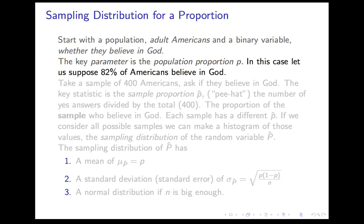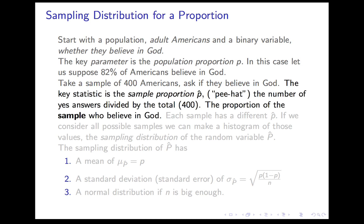Let's suppose that 82% of Americans believe in God, so our proportion P equals 0.82. Now imagine a sample of adult Americans — I want to ask if they believe in God. We would be interested in a statistic, the sample proportion, written as P with a hat over it. The hat indicates we're in the sample; the lack of a hat indicates we're in the population. P-hat is the proportion of the sample who believe in God — the number divided by 400 in our case.